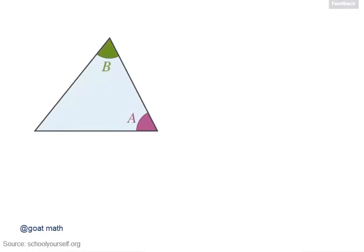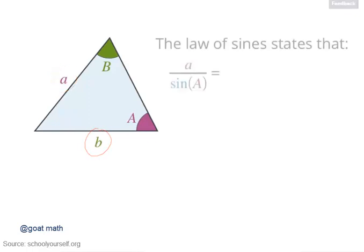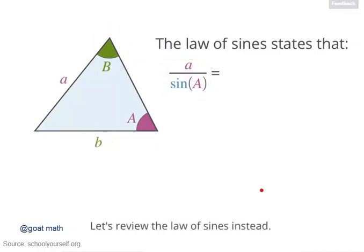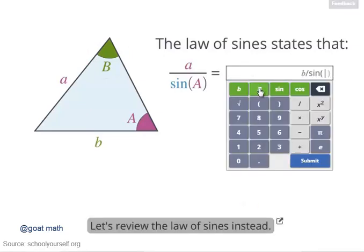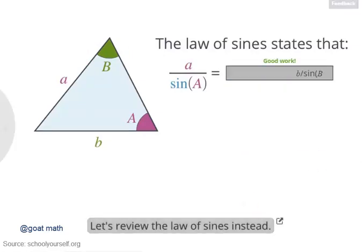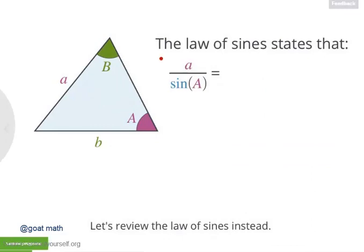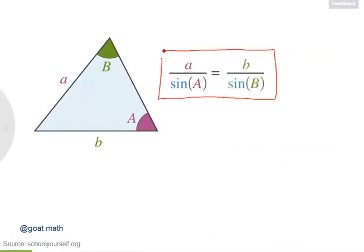Suppose you know these angles, a and b, as well as their opposite sides, lowercase a and b. According to the Law of Sines, what does a over the sine of angle a equal in terms of side length b and angle b? If you're not sure, click down here to review the Law of Sines. Right, the Law of Sines says that a over sine a equals b over sine b.